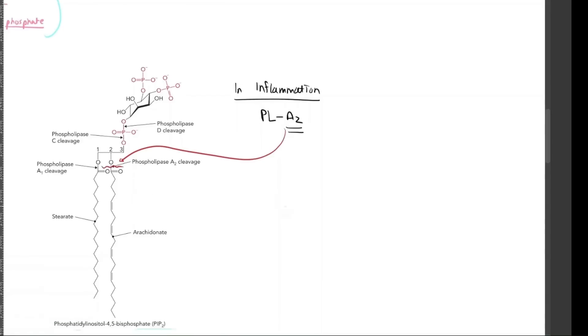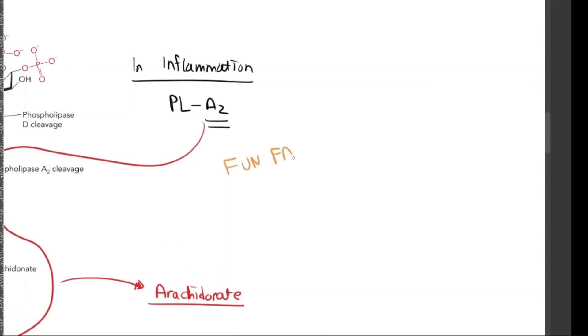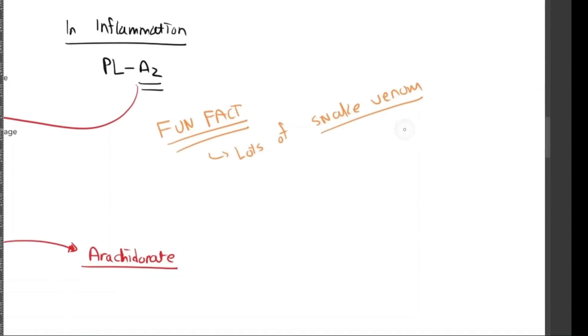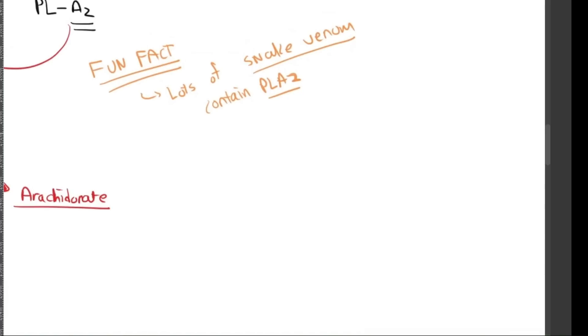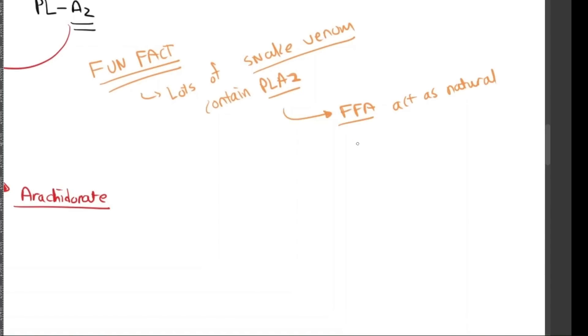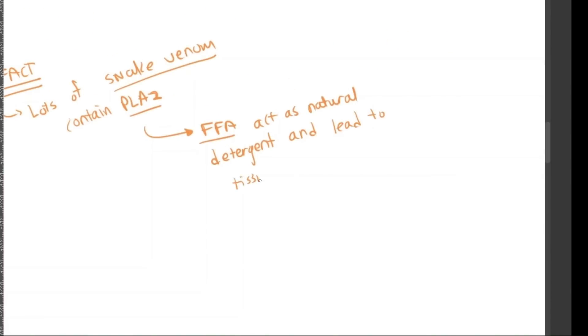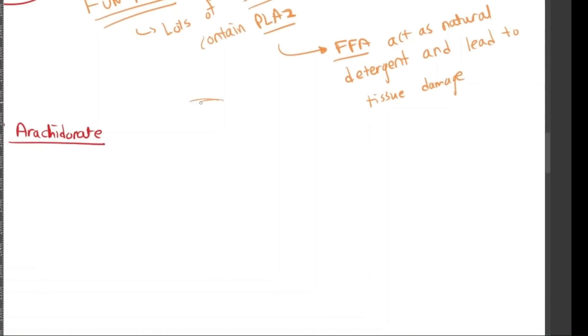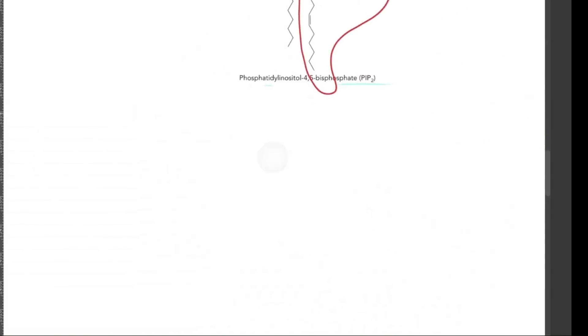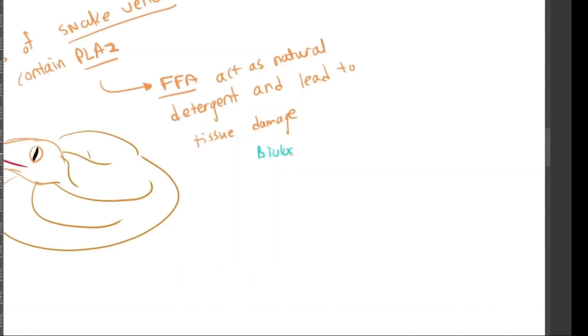So inflammation—we usually have this phospholipase A2 cleavage, which cleaves this arachidonic acid fatty acid tail. A fun fact about arachidonic is that a lot of snake venom, which causes inflammation, actually contains phospholipase A2 as a key modulator enzyme. This basically releases that free fatty acid to increase the inflammatory pathway. The free fatty acid acts as a natural detergent that leads to tissue damage. The PLA2 will release a free fatty acid and a lysophospholipid, which only contains one fatty acid chain. This lysophospholipid is amphipathic and is basically able to disrupt the lipid bilayer, leading to increased cell permeability and cell lysis.